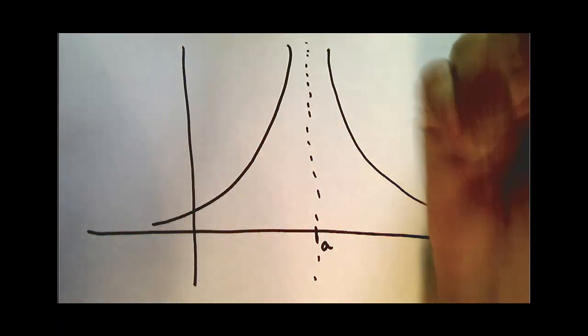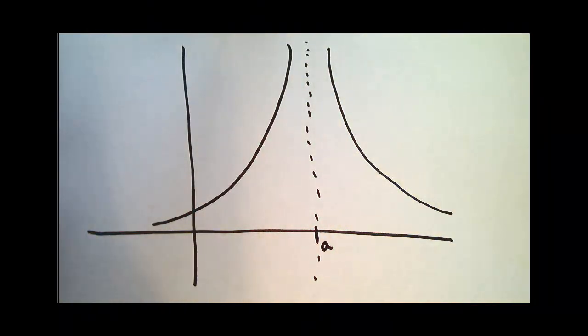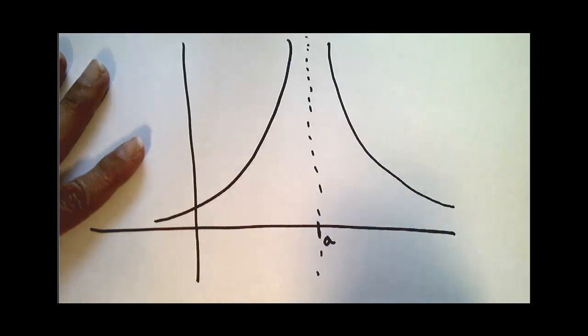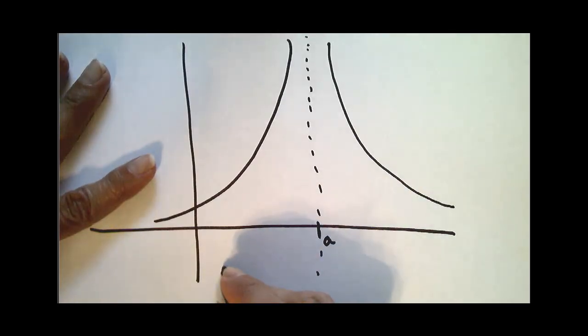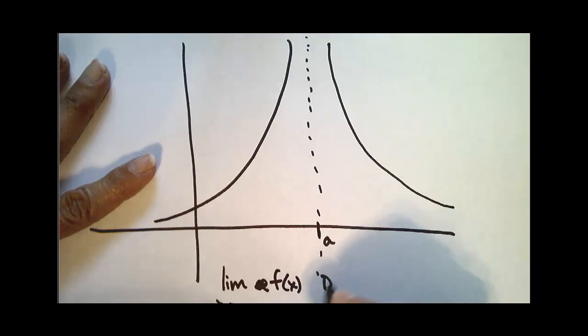They do match, however, they don't go to a finite number. So we would say, and this would be right to say, the limit as x approaches a of f of x does not exist. That is certainly true.